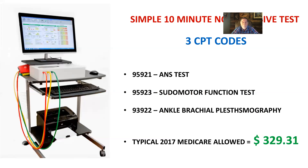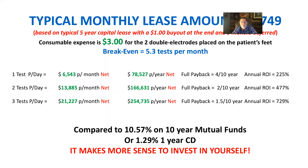The typical Medicare allowed amount nationally averaged is $329 for these three codes — it may be as low as $289 or over $400 in San Francisco, Alaska, or Hawaii for higher localities. Typical lease on this equipment, if you're doing a five-year capital lease — which most CPAs recommend for the Section 179 tax write-off — would be a dollar buyout at end with three months deferred. Consumable cost is $3 per test using two electrodes. Break-even is about 5.3 tests per month.